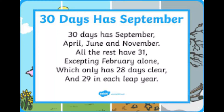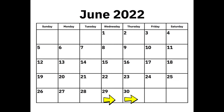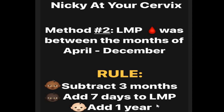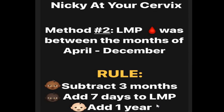Since we know June only has 30 days and we're at June 28, we add two more days to reach the end of June — June 30. That uses up two of our seven days, leaving five days remaining. Those five days carry over into July, so we land on July 5, 2022. Finally, we add one to the year: 2022 plus one is 2023. So if the LMP was September 28, 2022, the due date would be July 5, 2023.